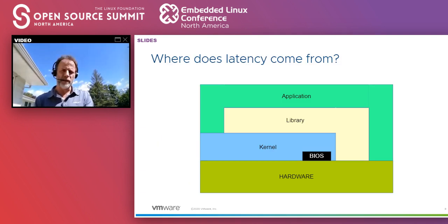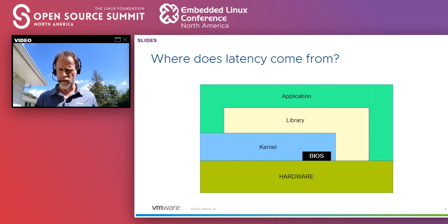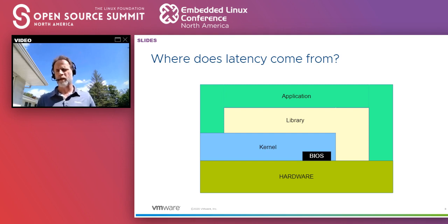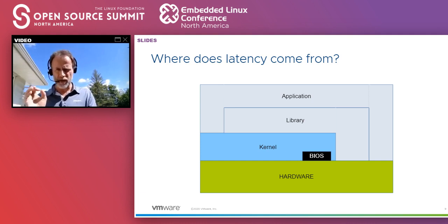So where does latency come from? If you look at your system, you have your application on the top layer. Below that, the application will most likely be talking to a library. That library will communicate to the kernel, and the kernel communicates to the actual hardware — your processor, getting resources. There are ways the library can circumvent the kernel, and even the application can circumvent both the library and the kernel. But we're going to focus on the latency that happens in the kernel and the hardware, including the BIOS — the basic input/output firmware — which I consider part of the hardware.